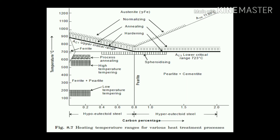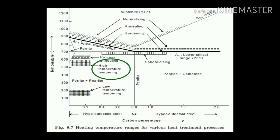The tempering process is only performed on hardened steel. If your steel has a high amount of hardness, you follow the tempering process after hardening, depending on how much change is required for your application. This can be low temperature tempering, medium temperature tempering, or high temperature tempering. Tempering is only applied to hardened steel to refine it and improve its properties. In the hardening process you get the maximum hard structure in the material.